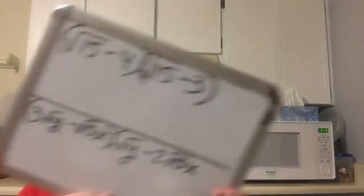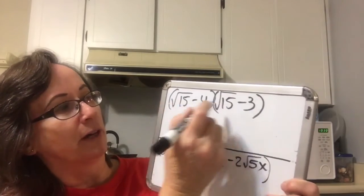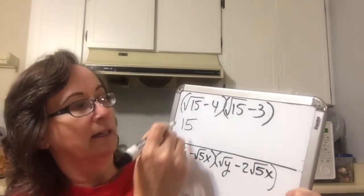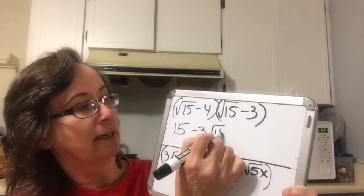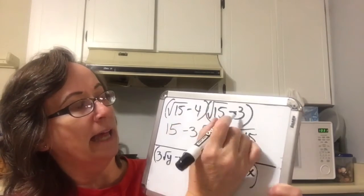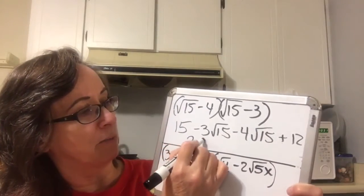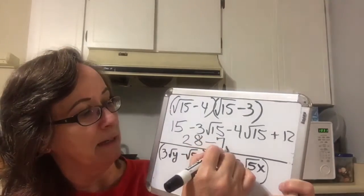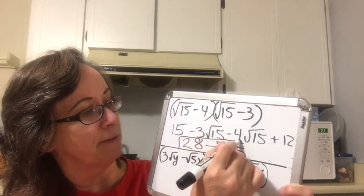On the next one we're FOILing again. The first will give us 15 because square root of 15 squared is 15. The outside will be negative 3 square root of 15. The inside will be negative 4 square root of 15. And the last will be positive 12. The 12 and the 15 combine to give 27 — wait, the teacher notes 15 plus 12 is 27, not 28. The negative 3 and negative 4 square root of 15 combine to give negative 7 square root of 15.